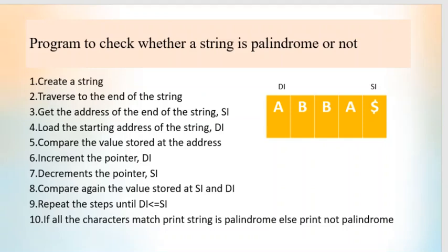Hello all. In this video segment we are going to discuss an 8086 assembly language program to check whether a string is palindrome or not. These are the steps for checking whether a string is palindrome or not. We have to use two registers: one to start our comparison from the beginning and the second to start from the end of the string. We will compare the contents of the memory locations character by character to see whether the string is palindrome or not.